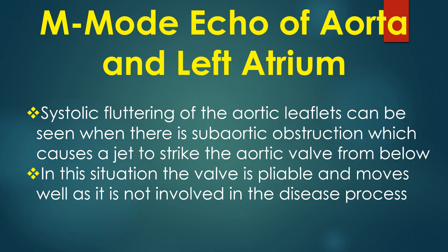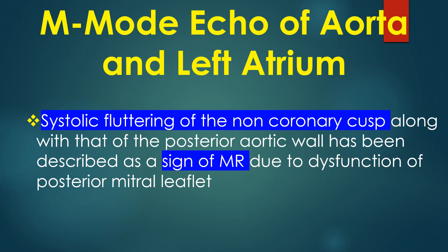Systolic fluttering of the aortic leaflets can be seen when there is sub-aortic obstruction, which causes a jet to strike the aortic valve from below. In this situation, the valve is pliable and moves well, as it is not involved in the disease process.